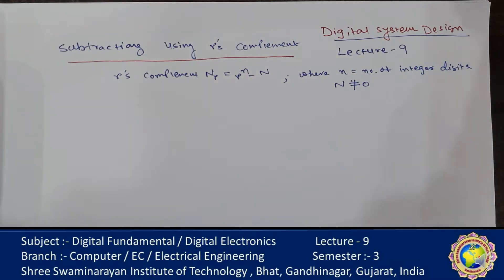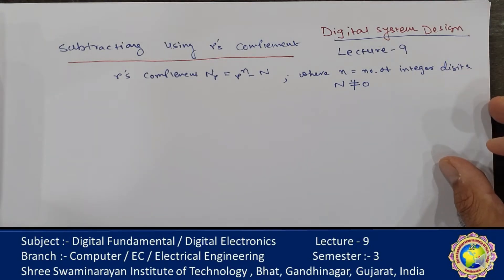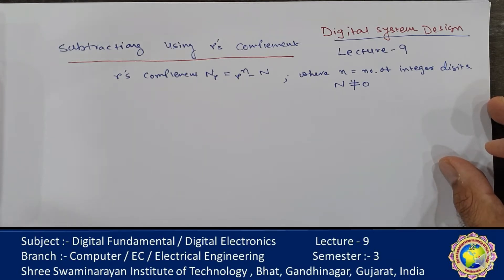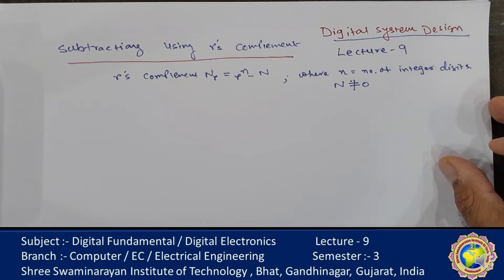This seems to be easiest when people perform subtraction with paper and pencil. However, when subtraction is implemented by means of digital components, this method is found to be less efficient than the method using complement and addition as stated in the subtraction of r's complement.